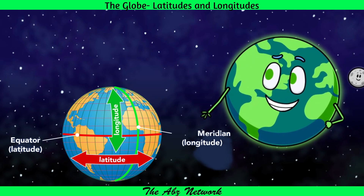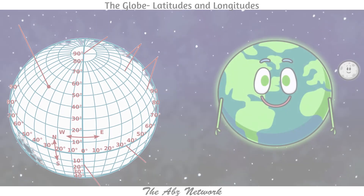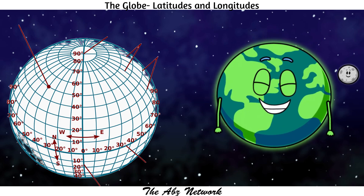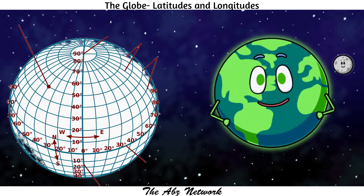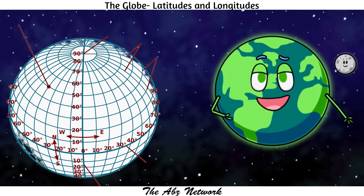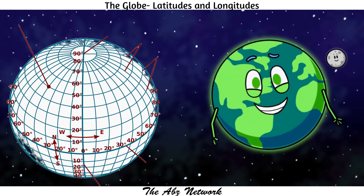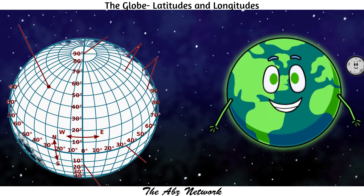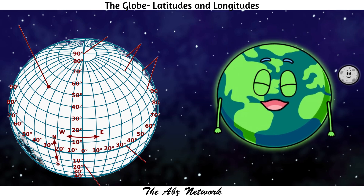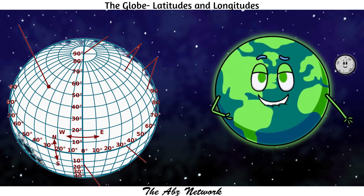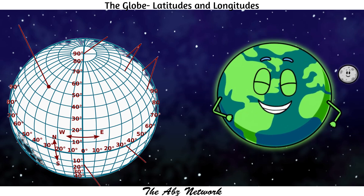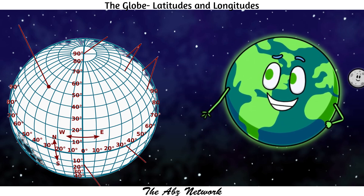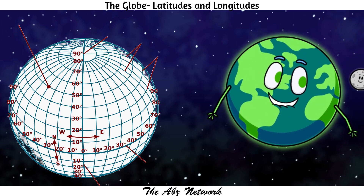82.5° East is the standard meridian of India. Our last topic is time zones. We have 24 different time zones in the world because the earth rotates 360° every 24 hours, so each time zone is 15° of longitude apart from the other. The Prime Meridian defines the center of the first time zone, which spans from 7.5° West to 7.5° East.